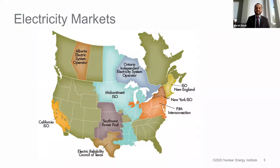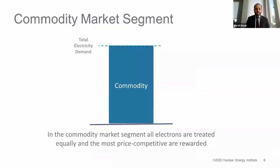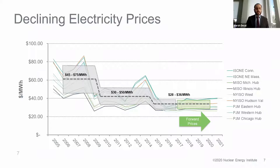We treat electricity as a commodity. All electrons are treated equally, and only the ones that are price competitive — the cheapest — are rewarded by getting on the grid. Another example of a commodity might be oil, or rice, or other agricultural products. If you look at electricity prices since 2005 to about now, you can see they have declined significantly over the years. There are many reasons for this: lower electricity demand, falling natural gas prices, and the failure of markets to recognize the attributes of nuclear and clean energy technologies.